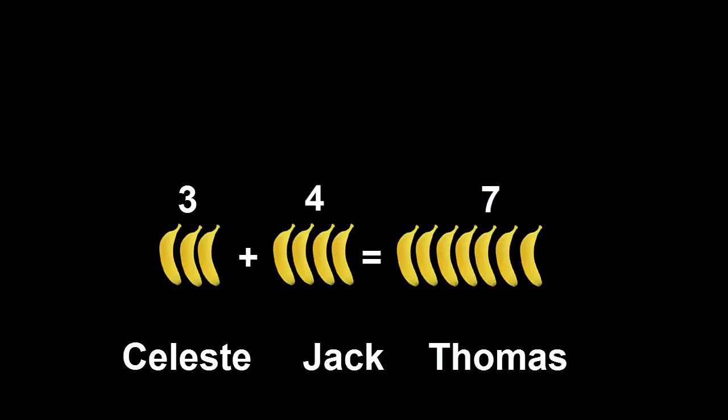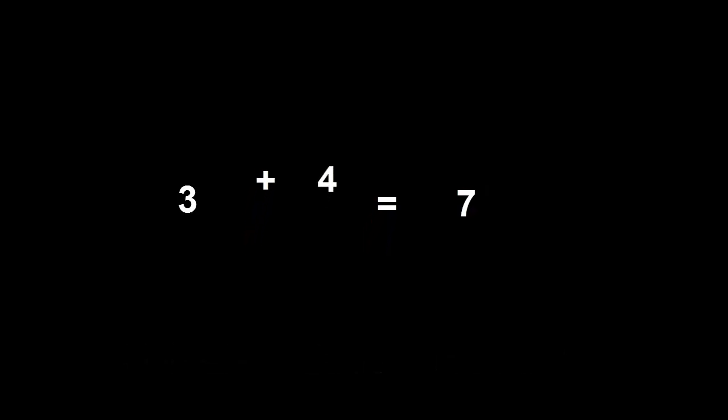Remember, Celeste's three bananas plus Jack's four bananas equal Thomas's seven bananas. We'll do the same balancing trick but only with numbers this time. Removing Jack's four bananas on the left means that we also have to remove four bananas on the right to keep the two sides equal. In math, we can do this by subtracting four bananas on the right instead. Wow, did you see that? It looked like we just swapped the four from the left side to the right side and changed the plus sign to a minus sign. Let's do that again.